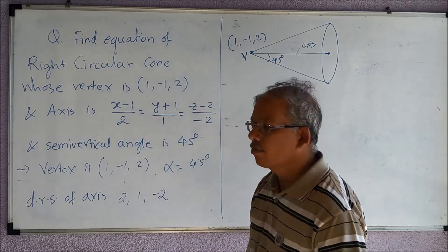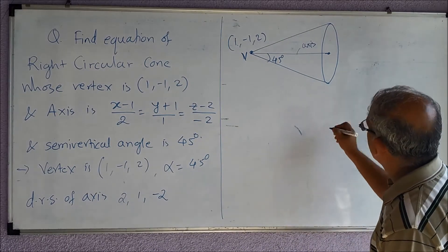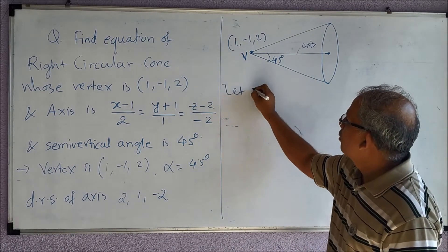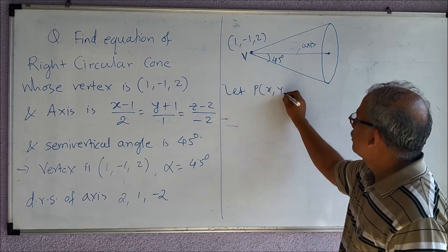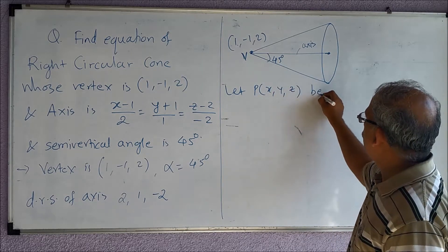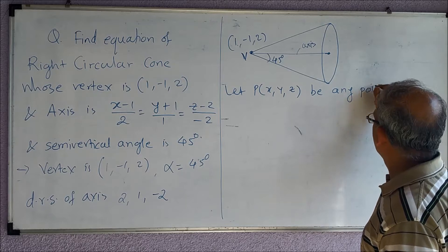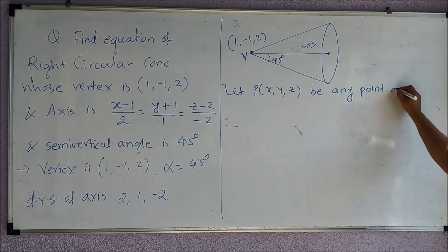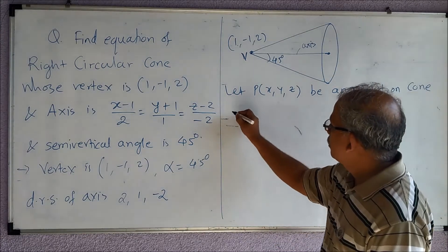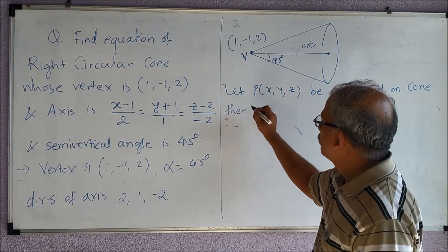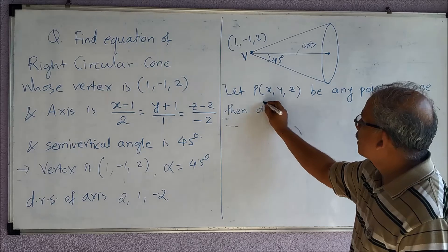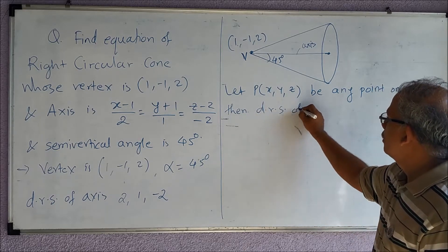Now I will say that let P(x, y, z) be any point on the cone, then the direction ratios of the generator are...